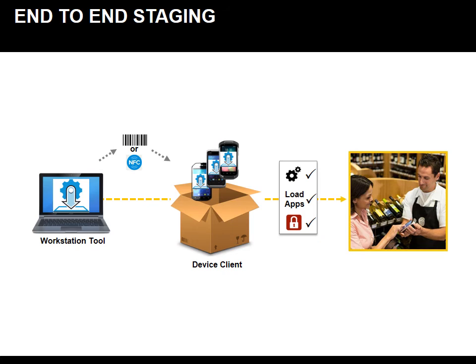This is an end-to-end diagram of what staging really is, with a view of where StageNow fits in. The workstation tool creates profiles and outputs them into barcodes or NFC tags. Devices with the StageNow client out of the box can then scan these barcodes and NFC tags in order to load settings, applications, security features, and much more, and create a perfect golden scenario for your devices.